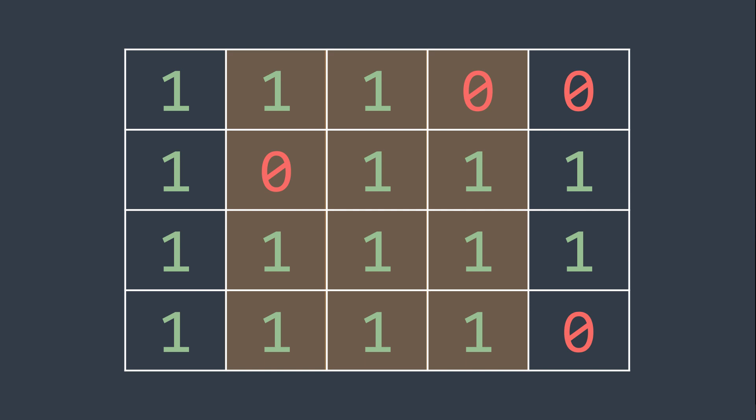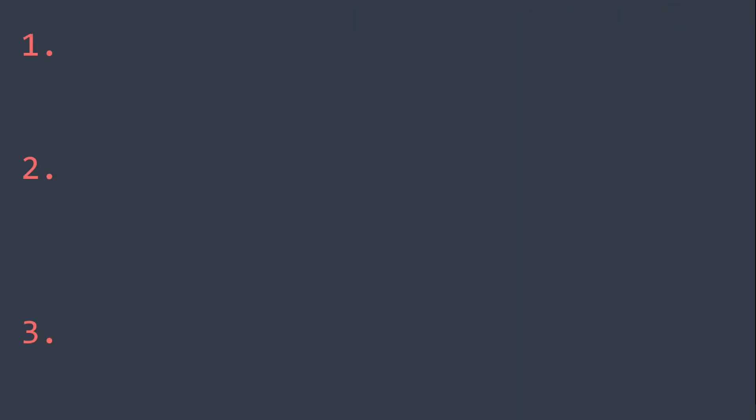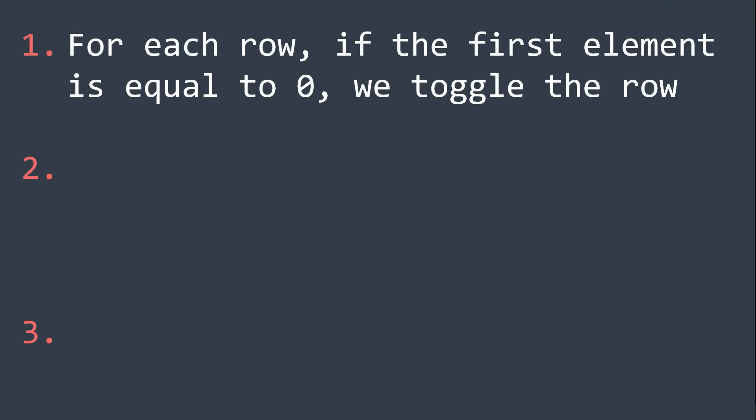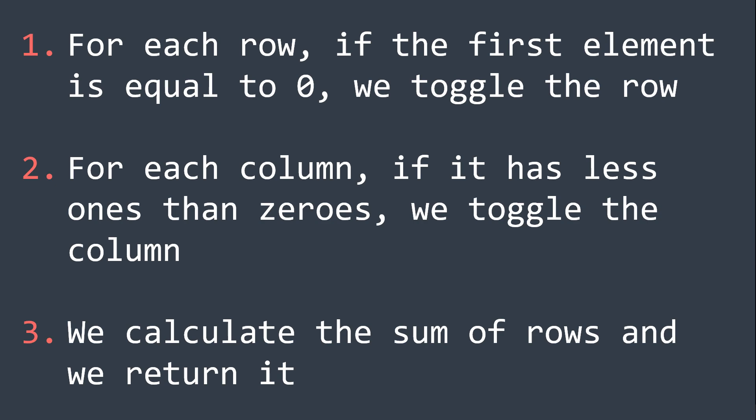Now that we toggled all the necessary rows and columns, we just have to calculate the sum of our binary numbers, and we return the result. In brief, our algorithm is divided into three parts. First part, for each row, if the first element is equal to zero, we toggle the row. Second part, for each column, if it has less ones than zeros, we toggle the column. Third part, we calculate the sum of our binary numbers, and we return the result.